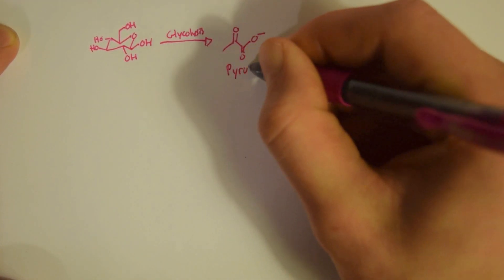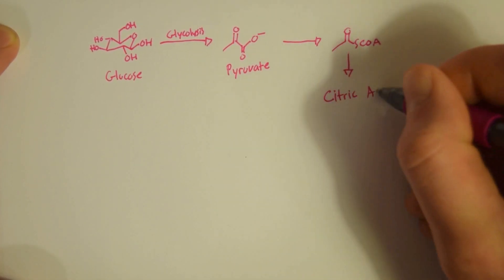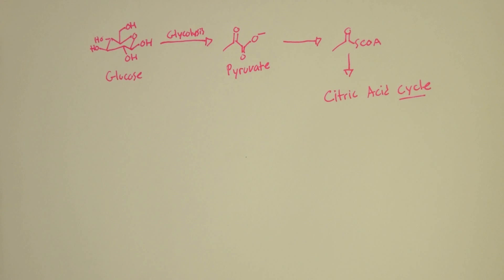So from glucose, we go through glycolysis and get pyruvate. And pyruvate needs to go to acetyl CoA to go into the citric acid cycle.